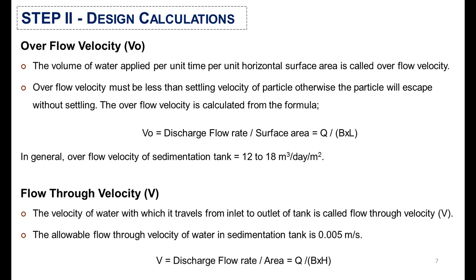The flow-through velocity is the velocity of water as it travels from the inlet to the outlet of the tank. Its allowable limit is 0.005 meters per second, and it is calculated by this formula.